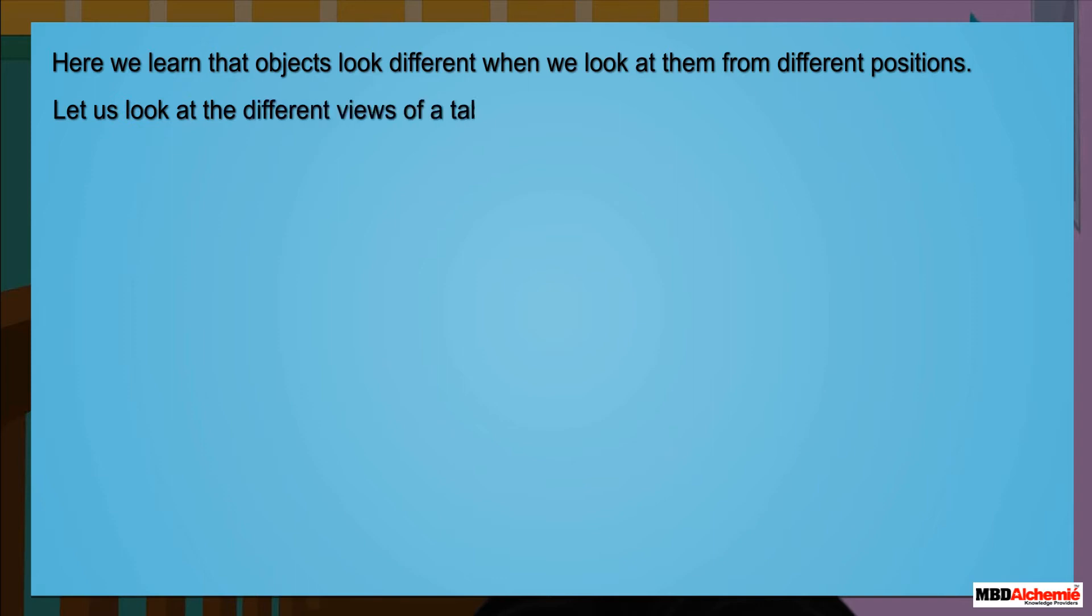Here we learn that objects look different when we look at them from different positions. Let us look at the different views of a table from the top, front and the side.